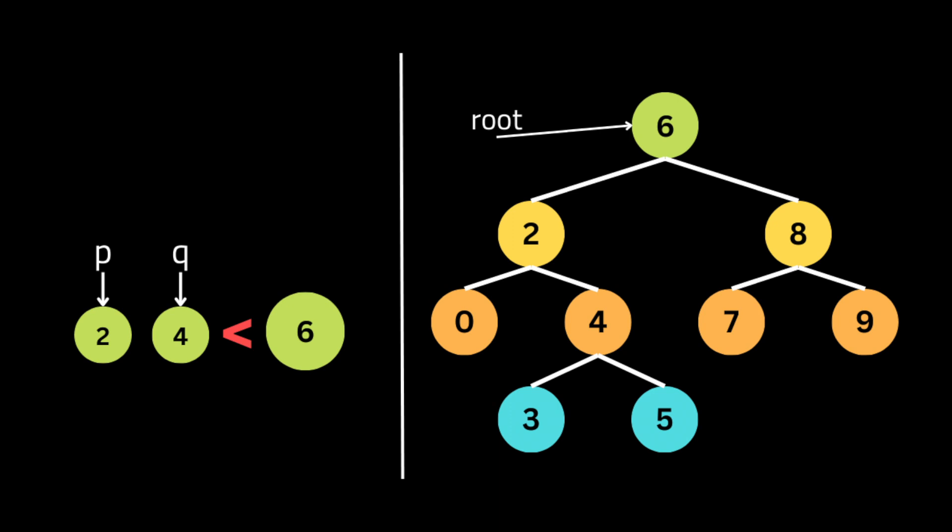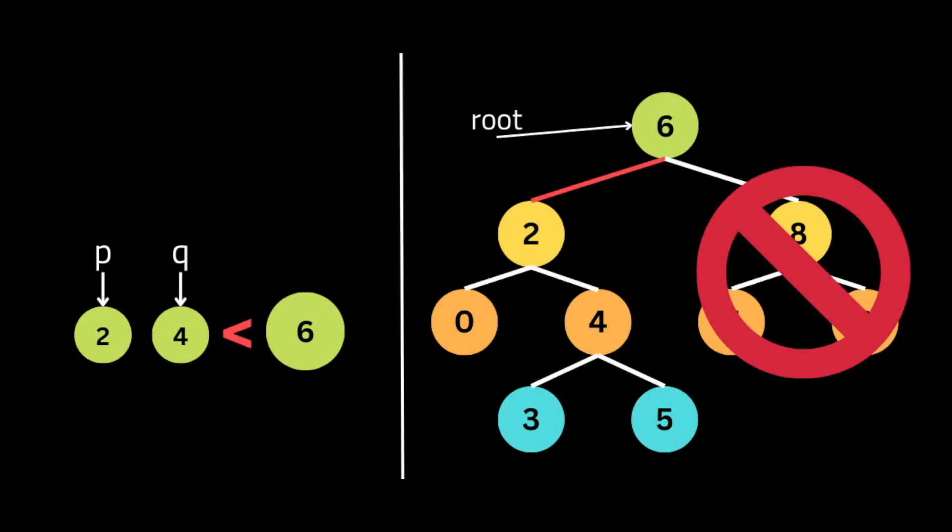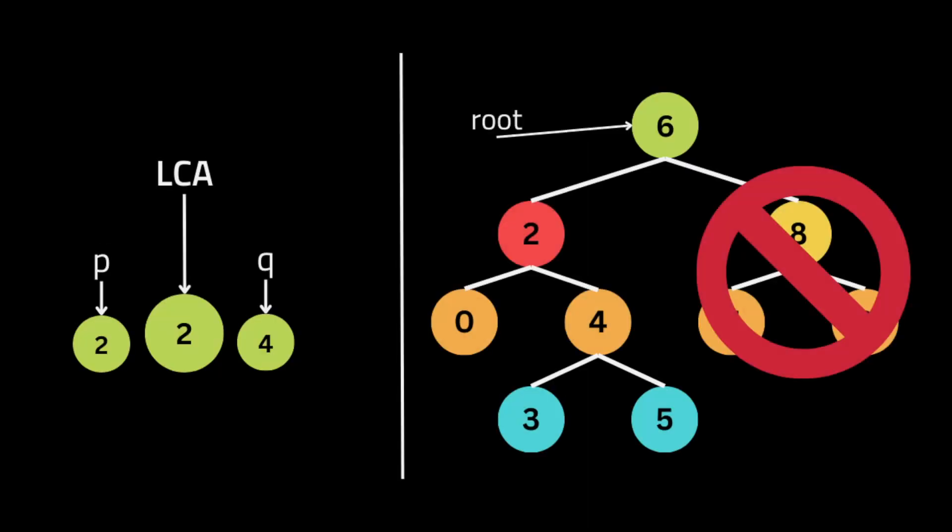We start at the root node, which has value 6. If the root node value is smaller than both target node values (2 and 4), we switch direction to the right subtree and eliminate the left subtree. Otherwise, if both target nodes are smaller than the current node, we eliminate the right subtree and switch to the left subtree.